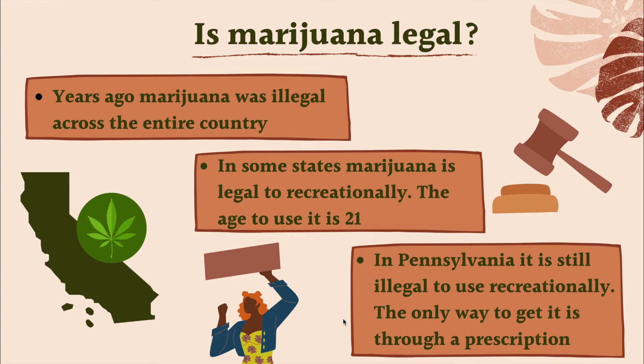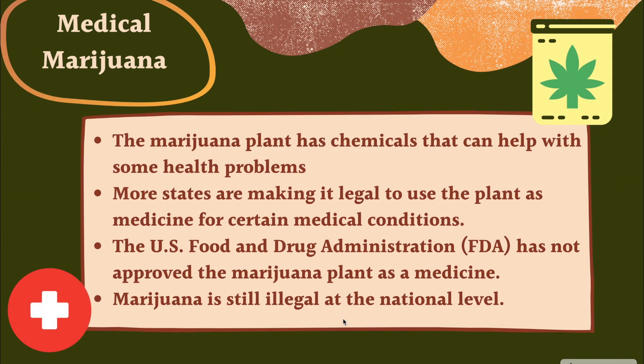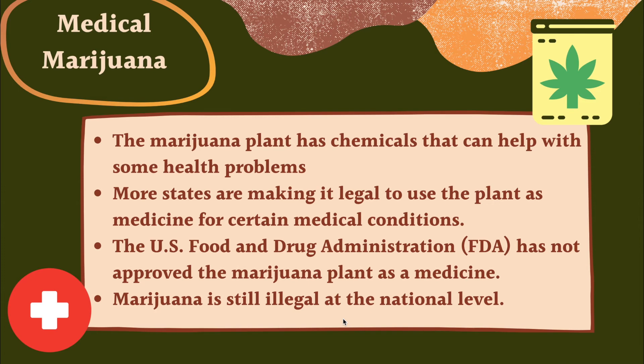Medical marijuana comes from the marijuana plant, which contains chemicals proven to help with certain health problems like seizures, pain management, and cancer. More states are making it legal to use as medicine for certain conditions. However, even though studies prove it helps, the FDA — the U.S. Food and Drug Administration — has not approved medical marijuana as a medicine. In states like California and Colorado it is legal, and in Pennsylvania you can use it medically with a prescription.